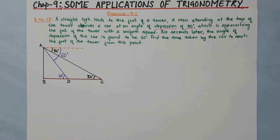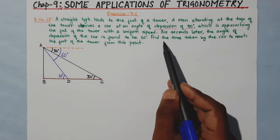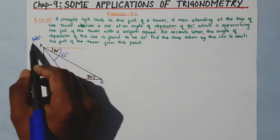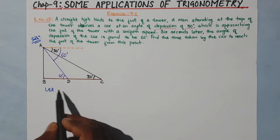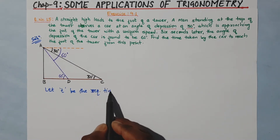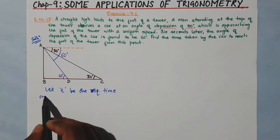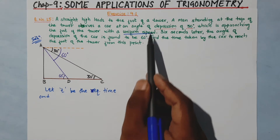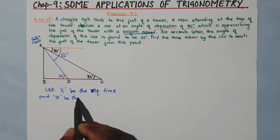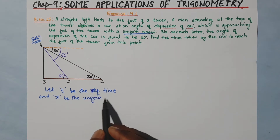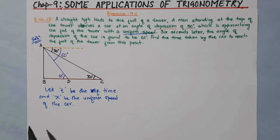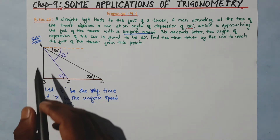Our figure is complete. We will find the time taken by the car to reach the foot of the tower. Let T be the required time, and let x be the uniform speed of the car.